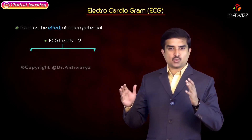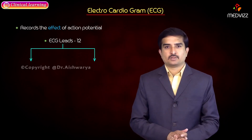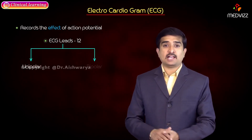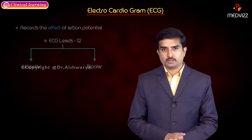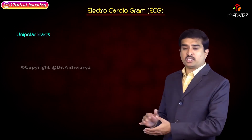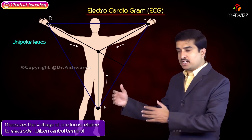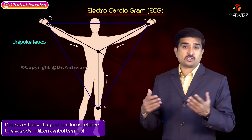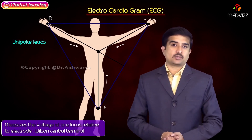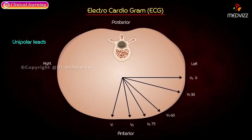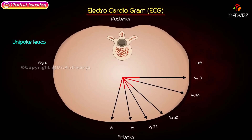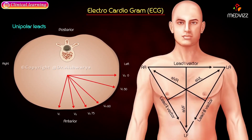There are totally twelve ECG leads, which include unipolar as well as bipolar leads. Unipolar leads measure the voltage at one locus related to the electrode called the Wilson central terminal. Among nine unipolar leads, six are chest leads V1 to V6, and three are augmented leads: AVL, AVR, and AVF.